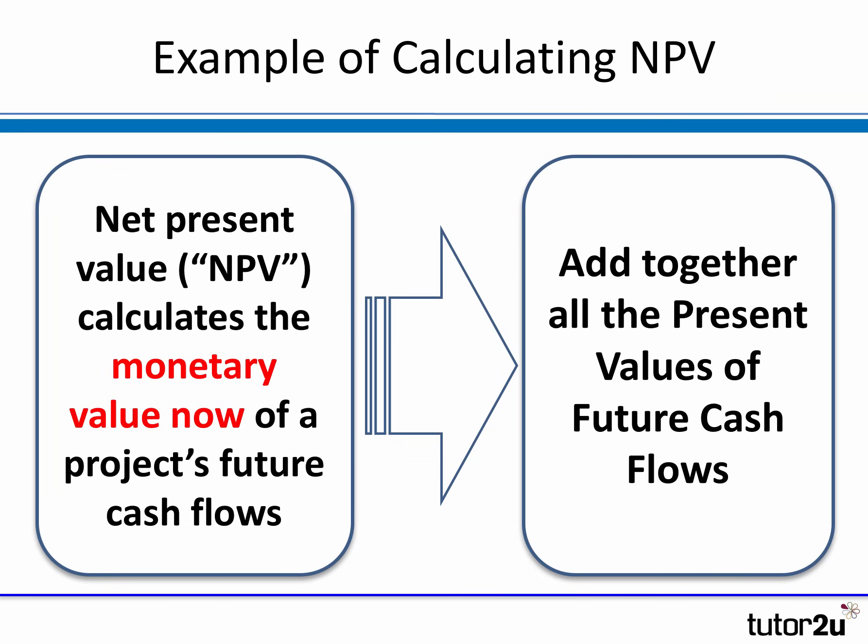To calculate net present value is really simple. We look at all the project's cash flows, we convert them to present values by applying the discount factor, and then we add them all up and see whether the total is positive or negative. That's the net present value — the sum of all the present values of future cash flows.